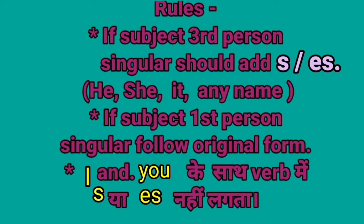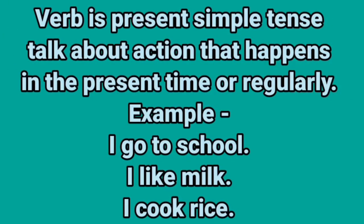Next rule: with third person singular number — he, she, it, or any name — we add S or ES to the verb. If subject is third person singular, add S or ES to the verb. With I or you, S or ES is not added to the verb. Verbs in simple present tense talk about actions that happen in the present regularly. Look at the following sentences: I go to school. I like milk. I cook rice. Notice the verbs go, like, and cook — they indicate actions happening in the present time.